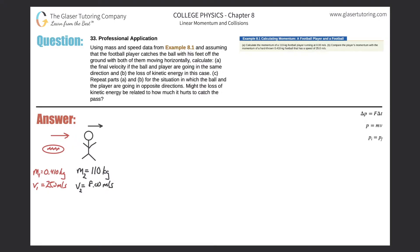Problem 33, professional application using mass and speed data from example 8.1: assuming the football player catches the ball with his feet off the ground, both moving horizontally. Calculate part A — the final velocity if the ball and player are going in the same direction. Example 8.1 is on the upper right. The picture on the left shows them moving in the same direction.